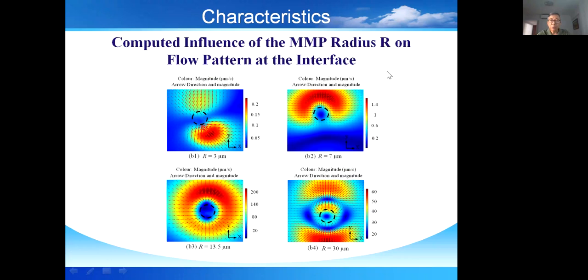Based on the computation, we found that the microprobe's radius matters. When this radius is too small or too large, the flow at the interface cannot flush the particles to one region for concentration.